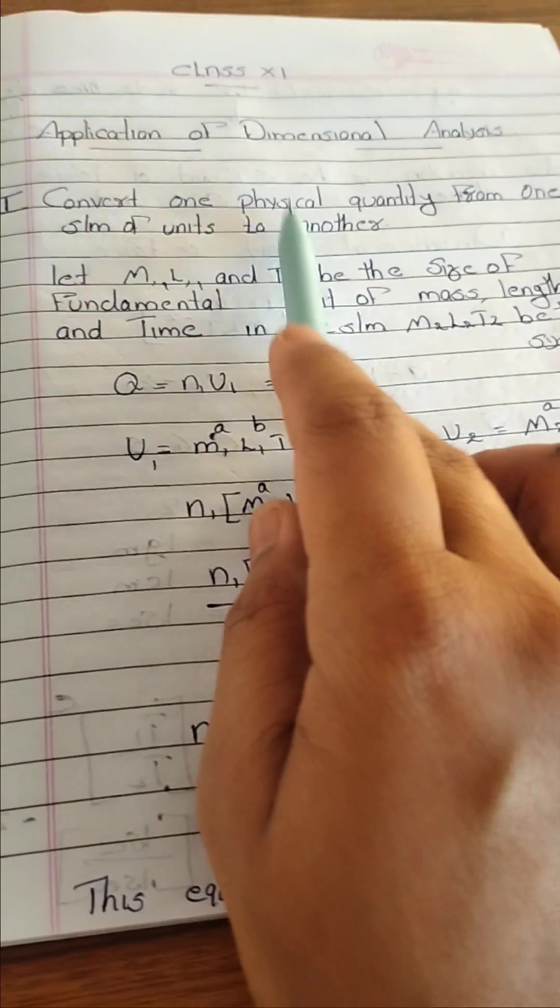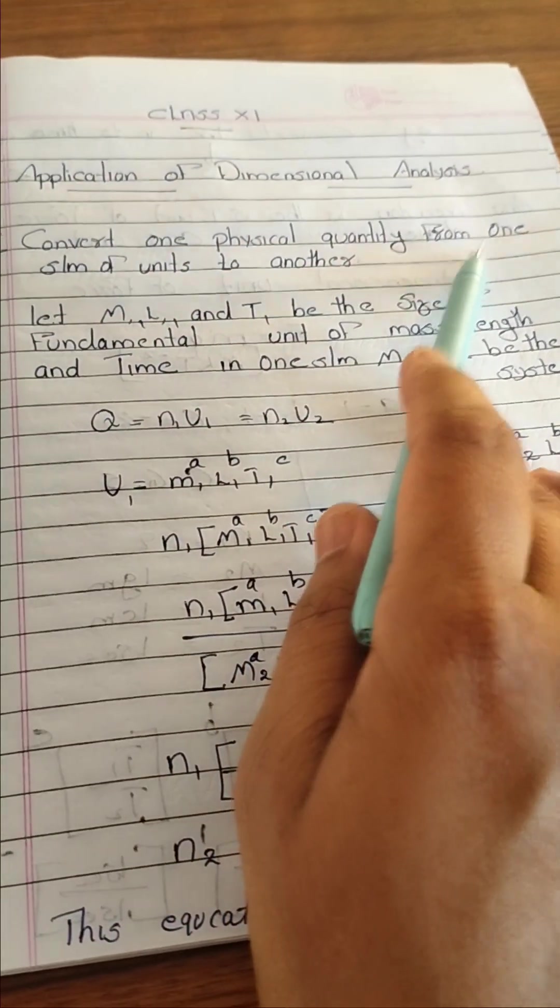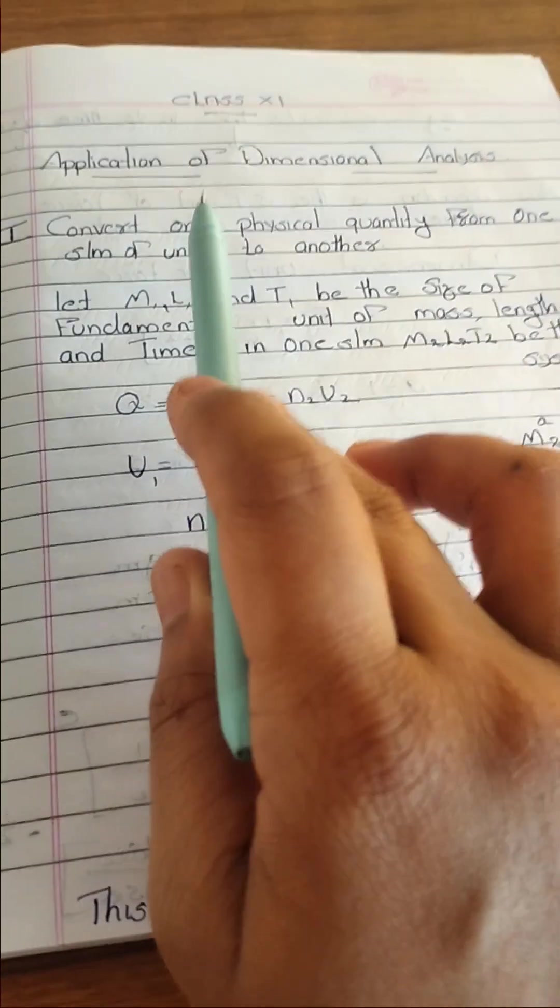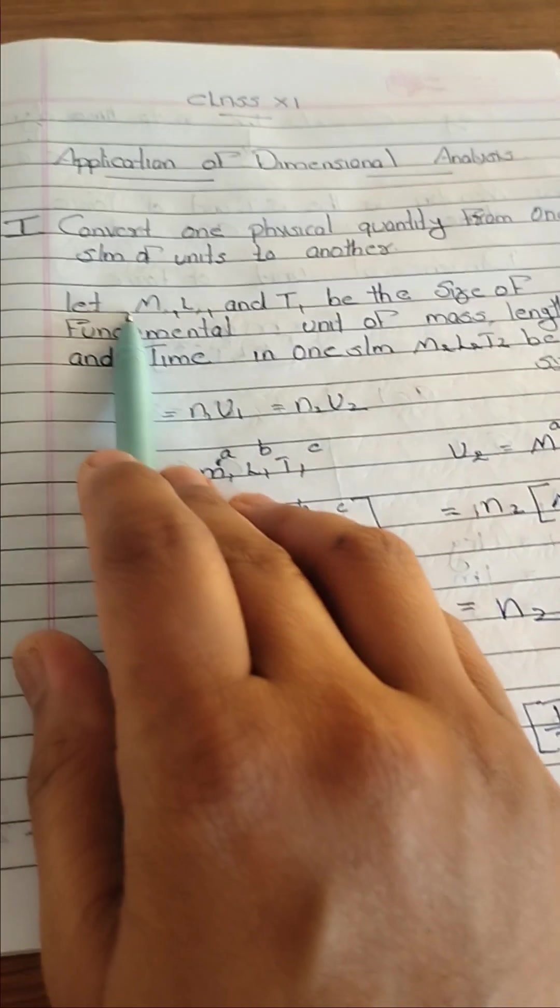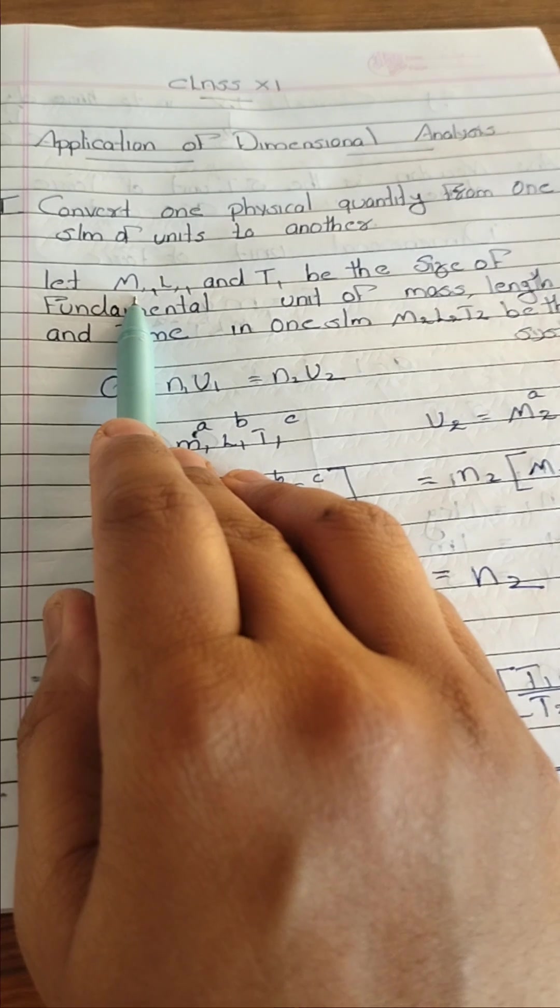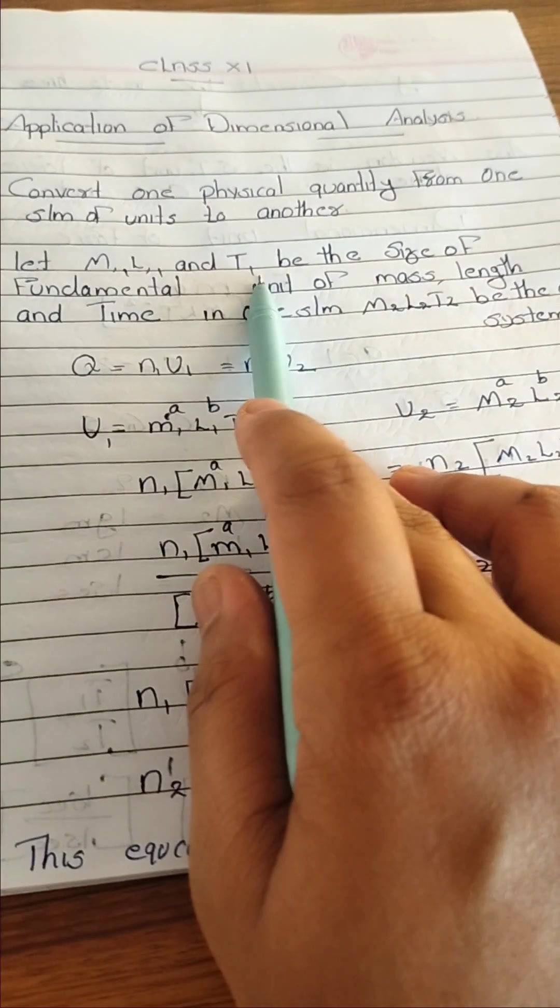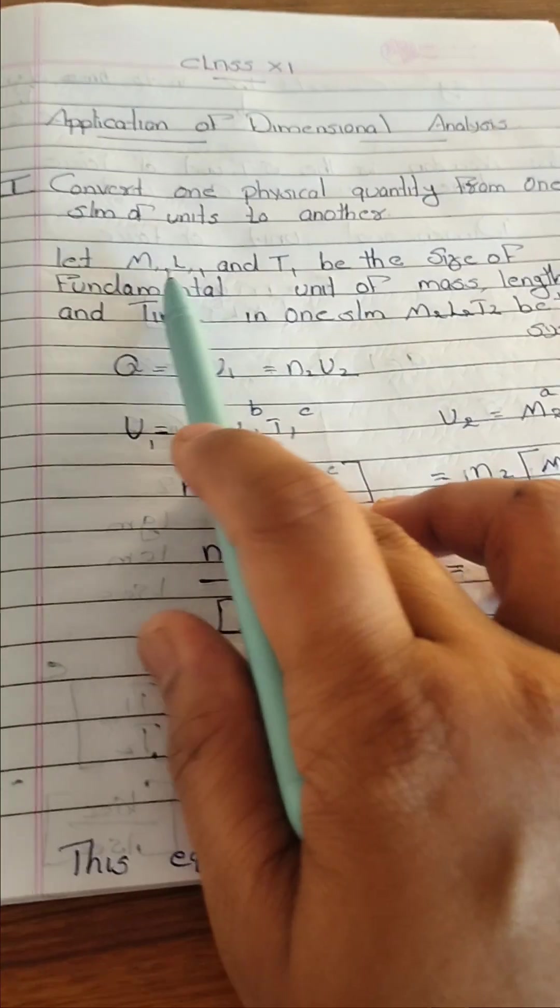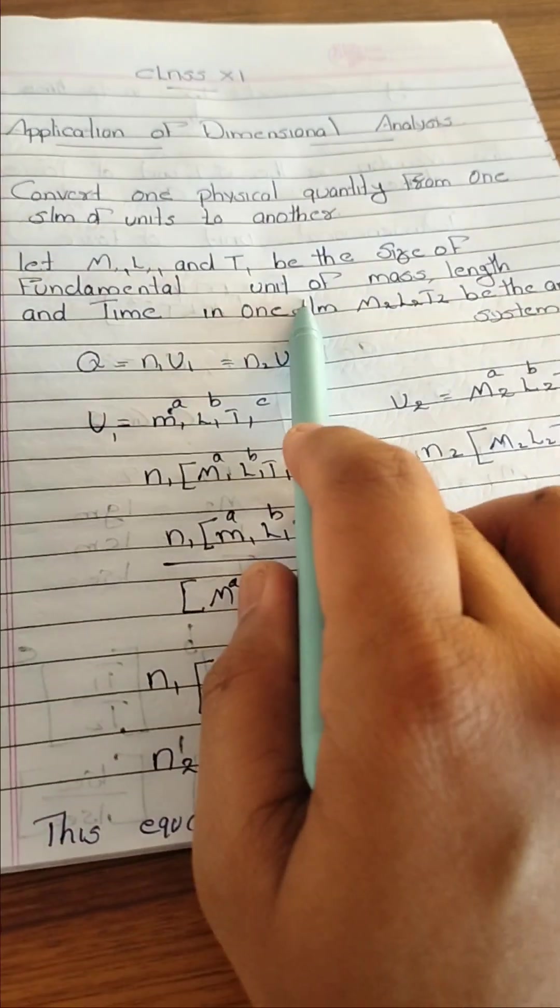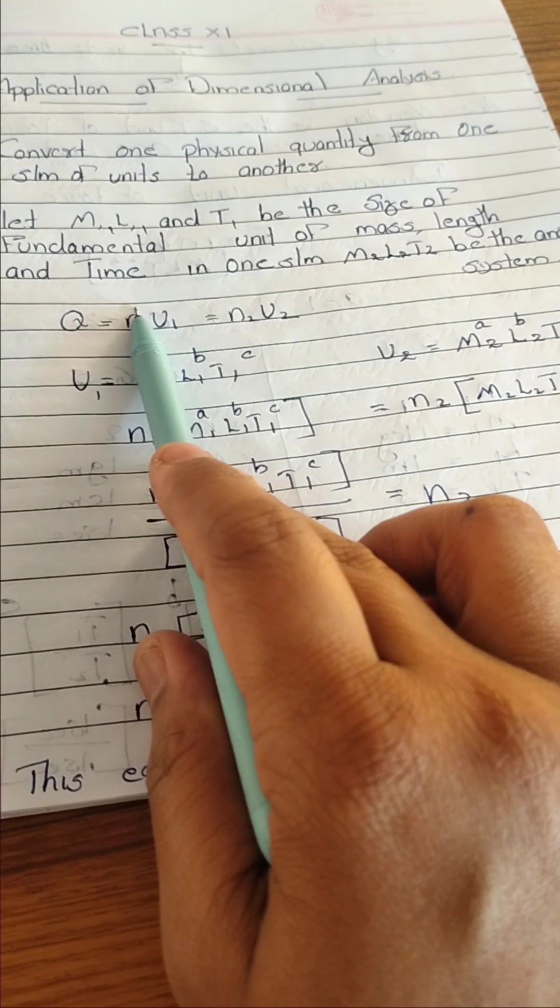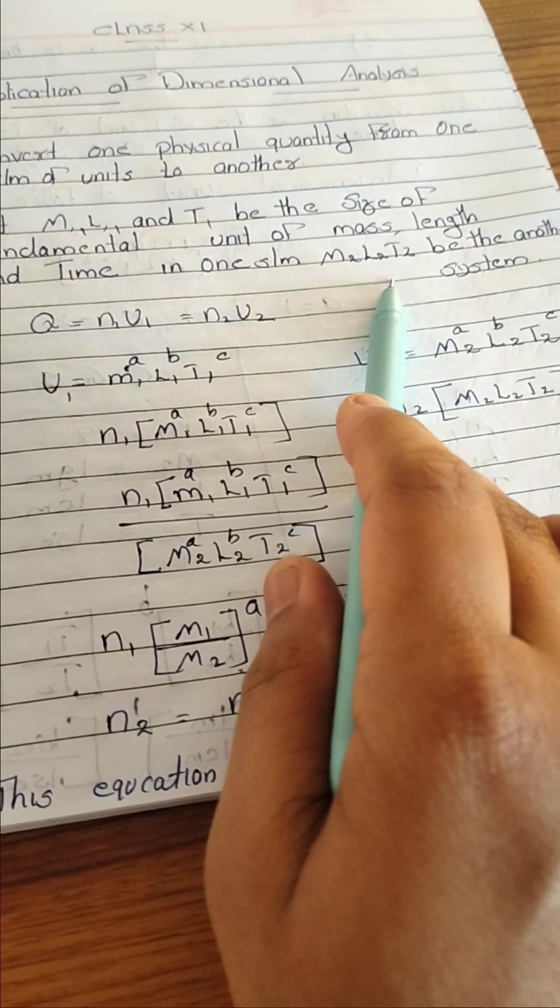So different physical quantities have different system of units to measure. What is the meaning of physical quantity? Yes, you are correct. Mass is a physical quantity, length is a physical quantity, volume, time, etc. All are physical quantities. So now we are trying to do it, convert one physical quantity from one system of units to another.